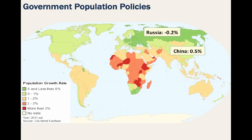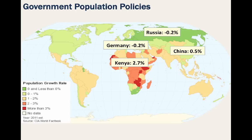Germany also has a 0.2% decline, mostly due to its standard of living and declining birth rates, especially among young women who are choosing to have careers and hold off raising families until later in life. Countries in sub-Saharan Africa such as Kenya have a 2.7% growth rate. The United States has a 0.6% growth rate, and newly industrialized countries like Brazil have a 1% growth rate.